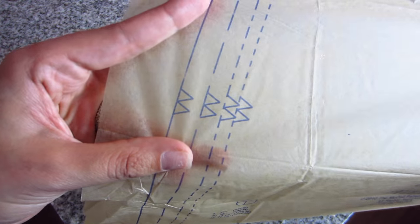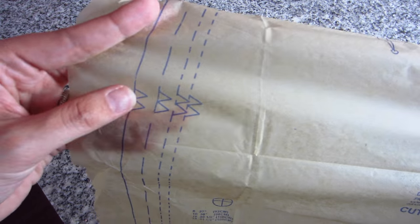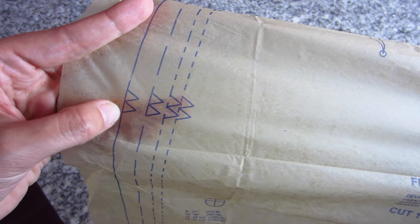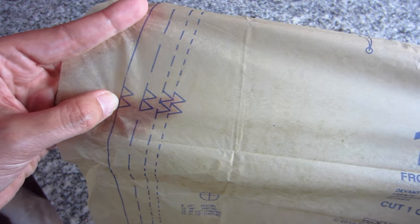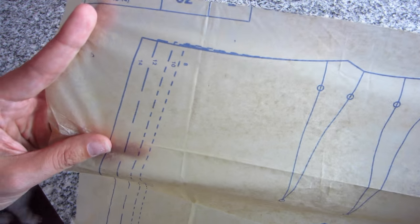Notches also look like this where there's like double peaks, and sometimes there's even triple peaks. So kind of all the same idea, but just one, two, or three depending on the area of the garment that you're working on.